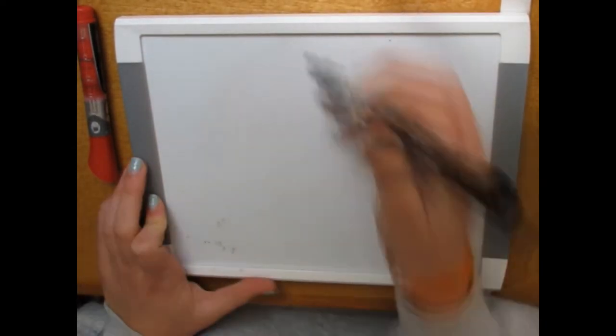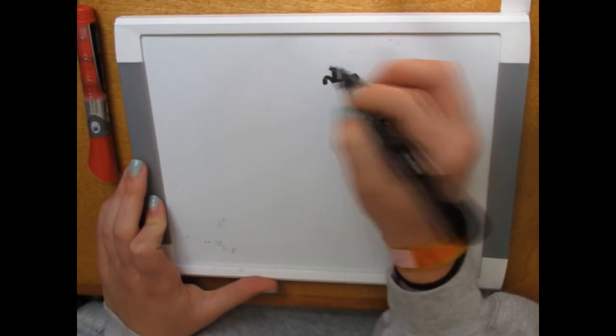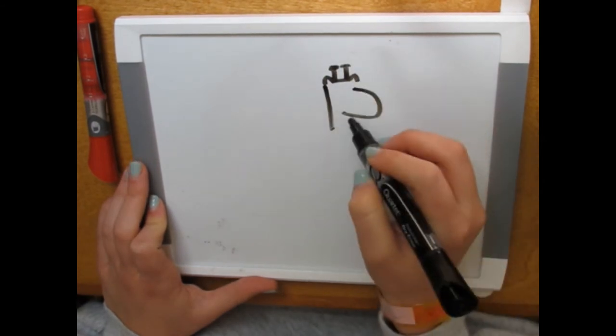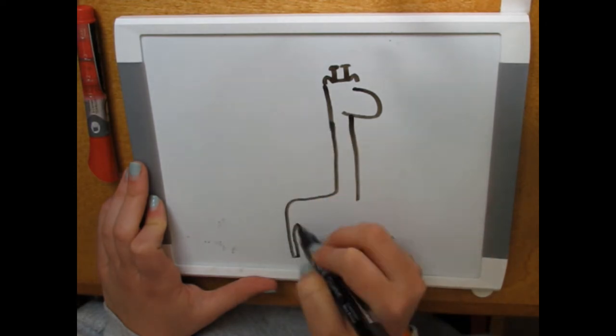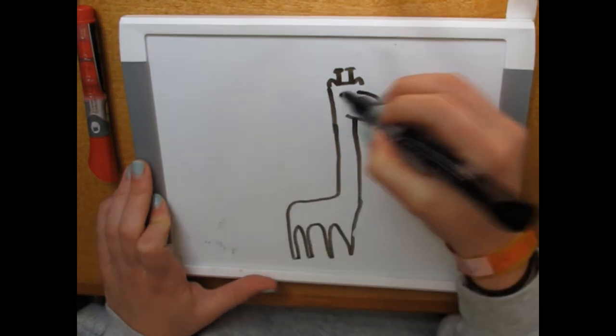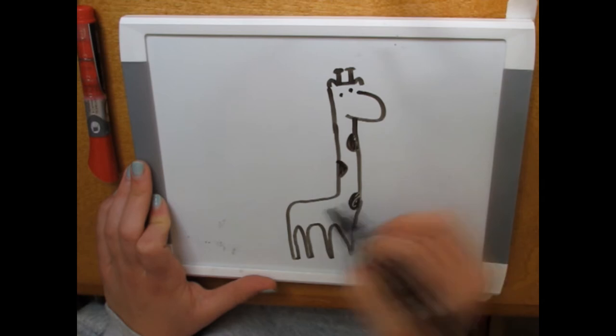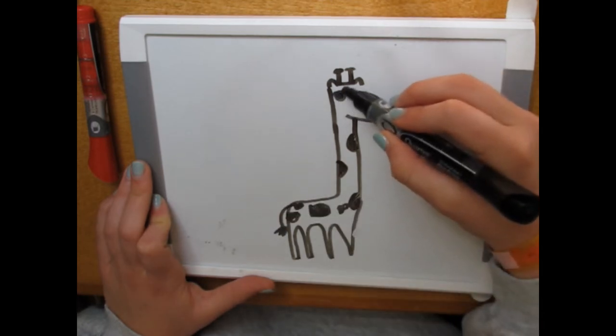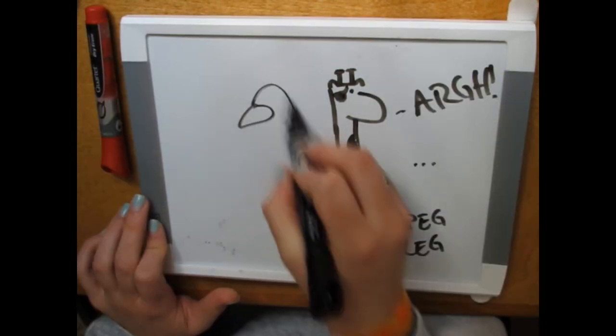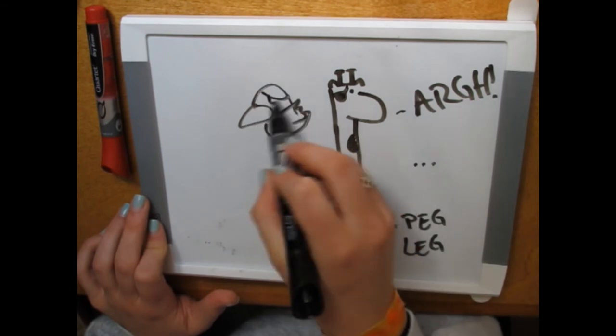But I figured out if you make his ears really small and you make his nose really big you can kind of make him look like a giraffe. And then I had to add an eye patch because I accidentally gave him a peg leg. I even drew him a little parrot friend.